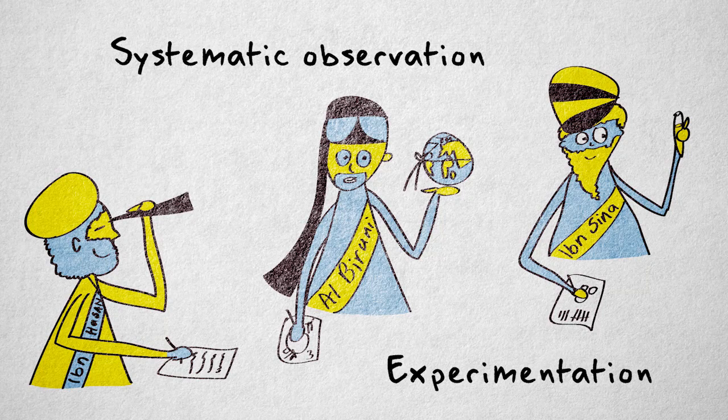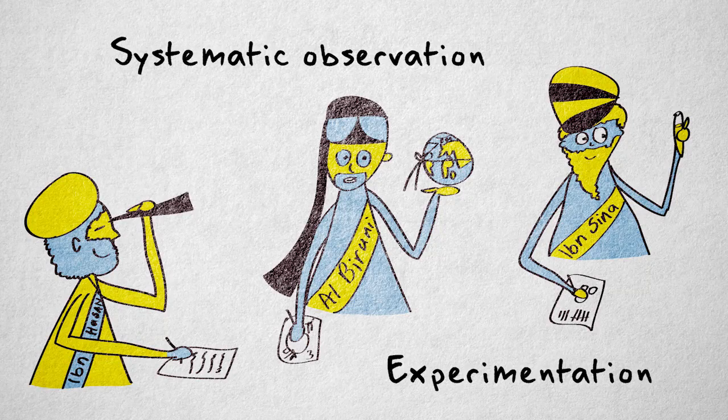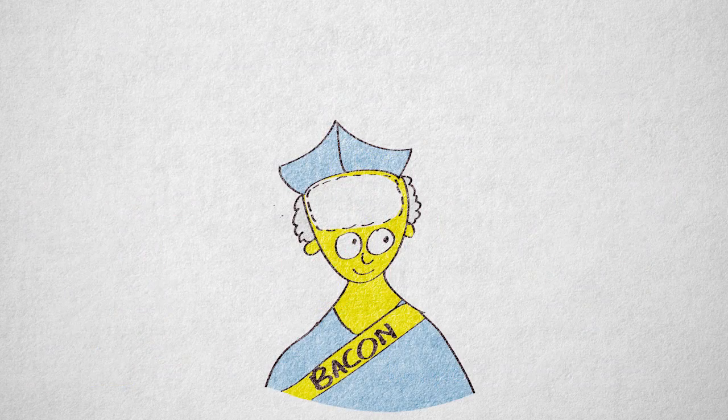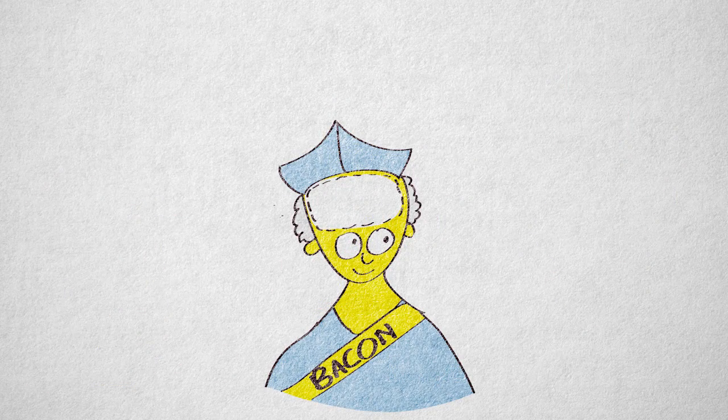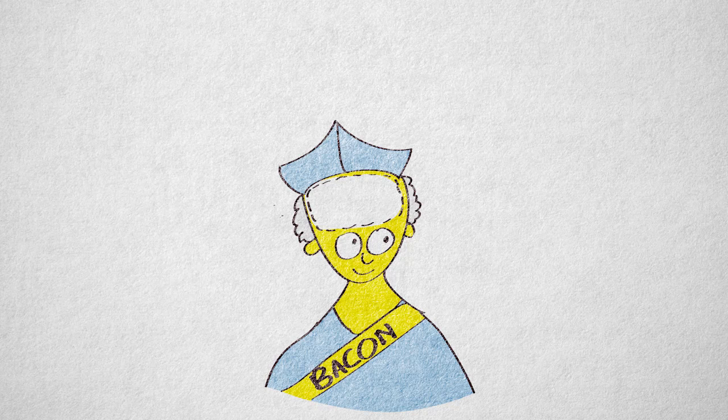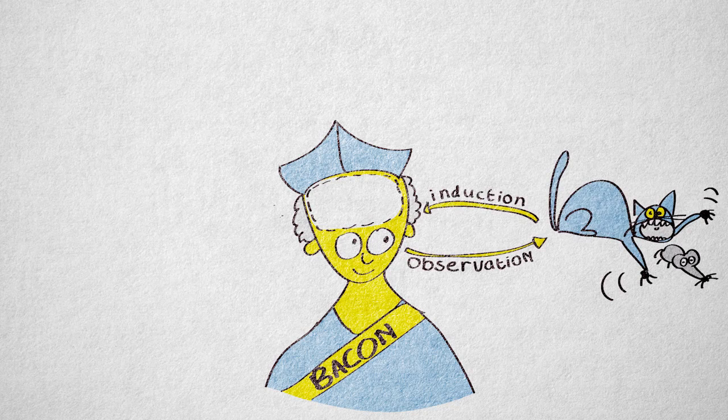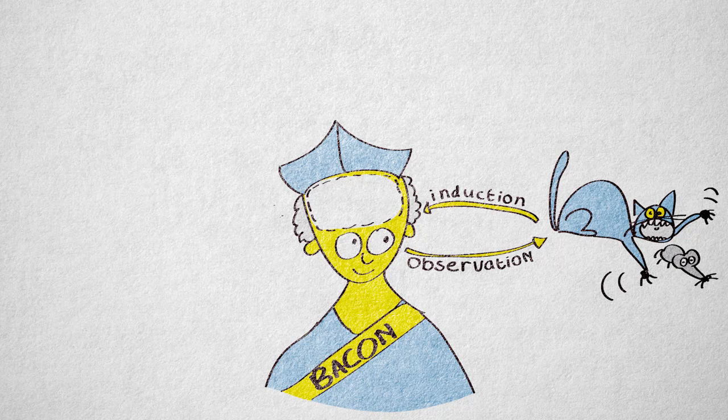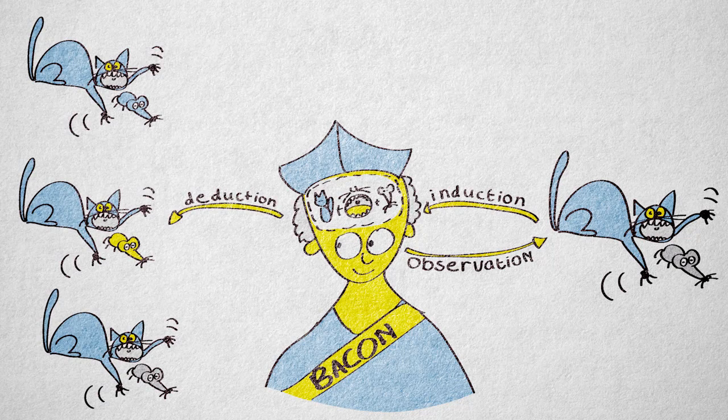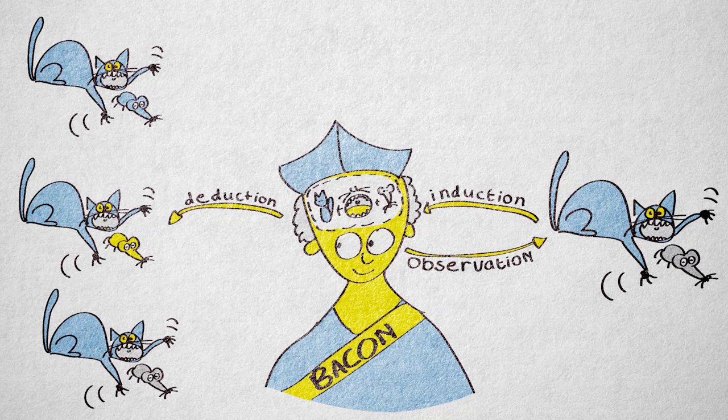Second, building on the work of their predecessors, the Englishman Gross Test and Roger Bacon advocated the use of both induction and deduction. Induction means using particular observations to generate general explanations. Deduction means predicting particular outcomes based on general explanations.